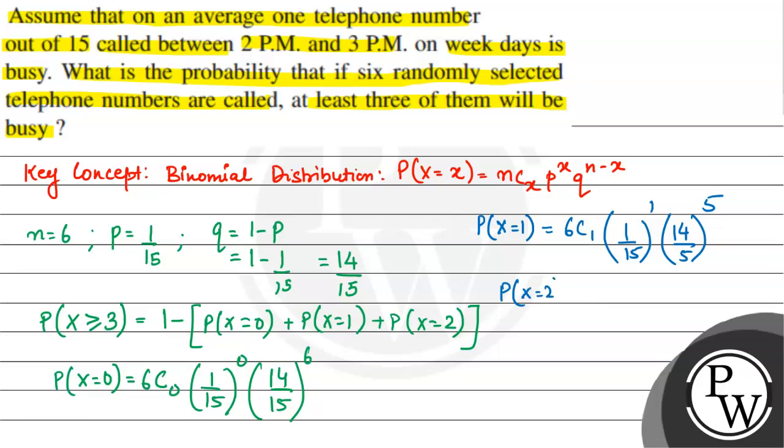The probability of x equals 2 now will be 6C2 multiplied by 1 by 15 to the power 2 multiplied by 14 by 15 to the power 4.